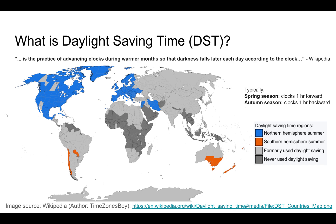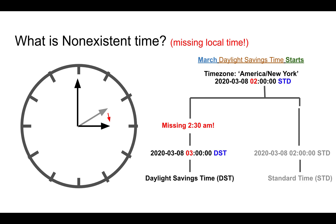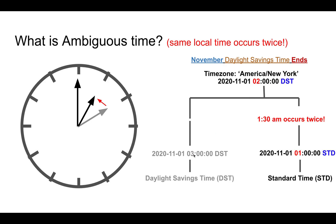What is non-existent time? In the month of March, the clock is moved one hour forward, so when it's 2 a.m. at night it is moved directly to 3 a.m. The time between 2 a.m. and 3 a.m. is lost — so 2:30 a.m. would not exist when we are looking at daylight saving time, because the clock jumps one hour forward, going directly from 2 a.m. to 3 a.m.